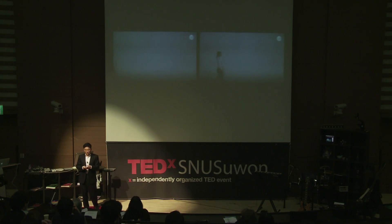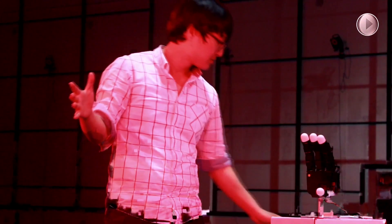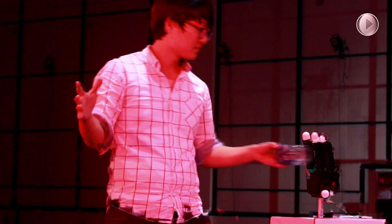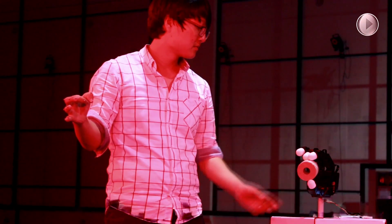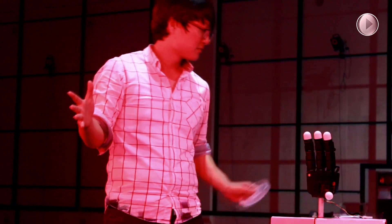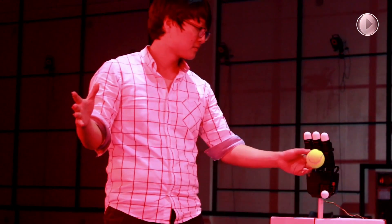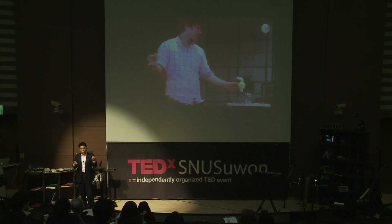I'd like to finish by showing a video of controlling a robot through a motion capture system. Here is Sangyeom Kim, my graduate student, standing in a motion capture system, moving his hand and showing grasping motion. The robot is mimicking this motion. At first glance it may look simple — just mapping human hand motion to the robot hand — but these two hands are different. The robot hand has only four fingers and fewer joints. The challenge is how to match these two motions so that it looks natural.